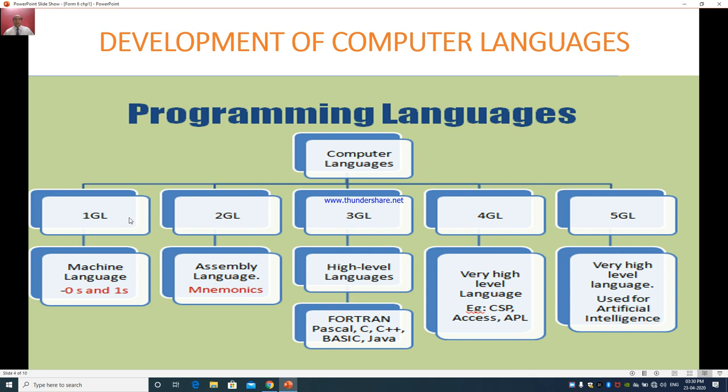This is the first generation in which machine language was used. That means it was the combination of zeros and ones to write a program. In second generation language, it used assembly language in which numeric codes were used instead of zeros and one which was used in machine language.